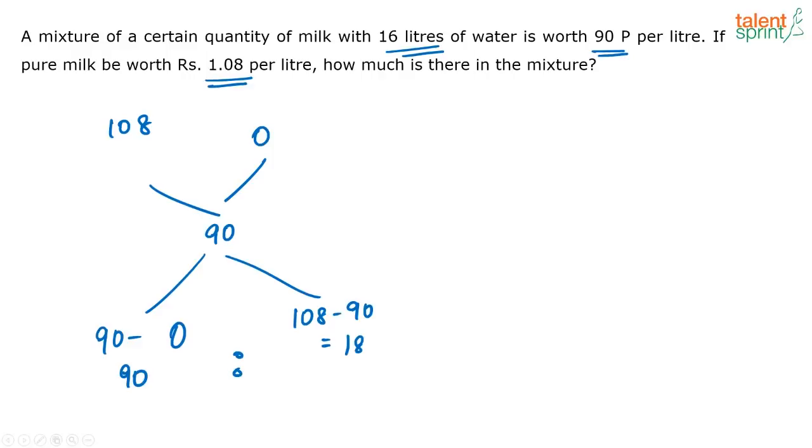So in the resultant mixture they are saying that there is 16 liters of water. So how much milk is there? See, milk and water are in the ratio 5 is to 1. So 5 out of 6 will be milk, correct?